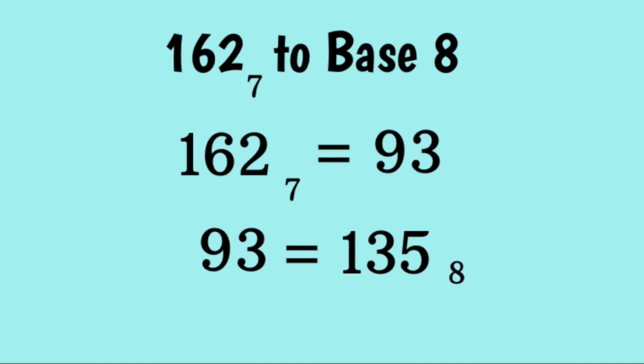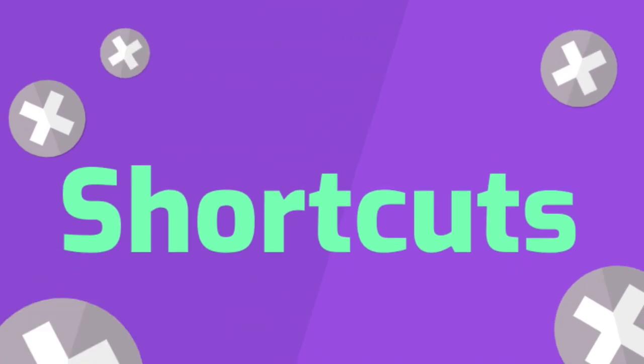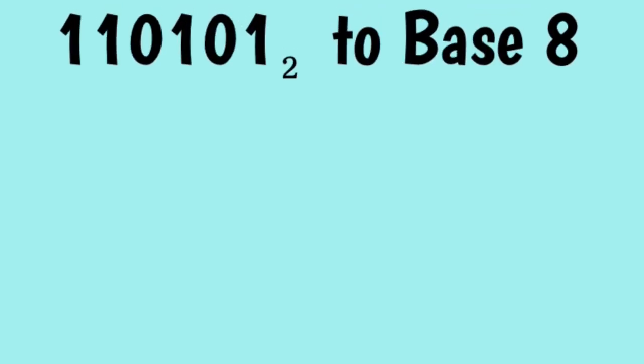There are, however, some shortcuts to doing this. In order for this trick to work, one of the bases must be a power of the other. Let's try an example. Convert 110101 base 2 to base 8. First, we know that 2 to the 3 is equal to 8. So, we must look for groups of three digits in our number.